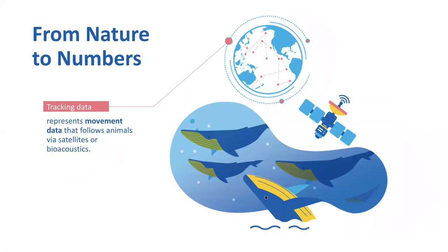Also recent additions to OBIS are tracking data from tagged animals that are tracked via satellites or acoustic receivers. Animal tracking helps us understand the dynamics of animal movements, discover migration pathways and connectivity between areas, which is important information for more effective conservation and management.